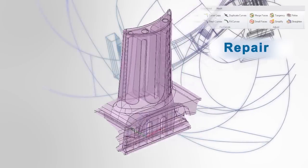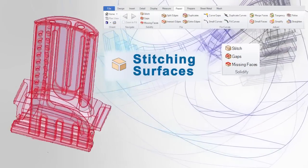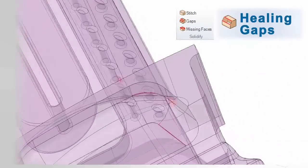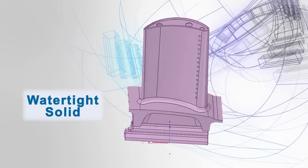When translations and models lead to corrupt data, this is where SpaceClaim shines. Our automated tools find things like gaps and missing faces and repair them instantly. Use these tools to ensure you have a watertight model for your next operation.